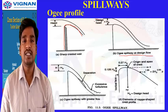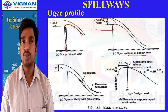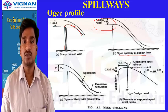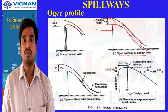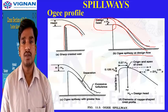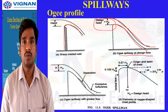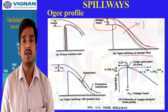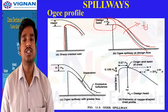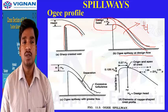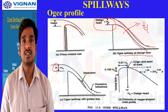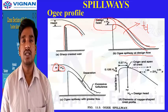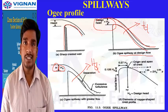The Ogee profile is designed for a specific design head Hd. When water flows at the design head, it follows the Ogee profile smoothly. In the third case, we consider what happens when the actual head at the freeboard is greater than the design head Hd — that is, the actual head exceeds the design head of the Ogee profile.